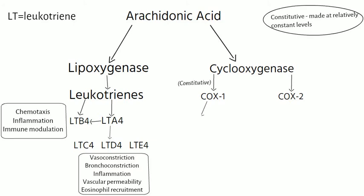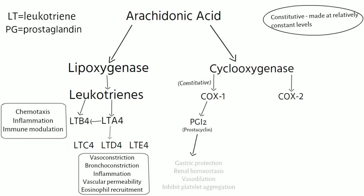The major products of the COX-1 pathway are prostaglandin I2, also known as prostacyclin. Prostacyclin plays an important role in gastric protection by helping to maintain the gastric mucosa, renal homeostasis by helping to control renal blood flow, vasodilation, and inhibition of platelet aggregation.